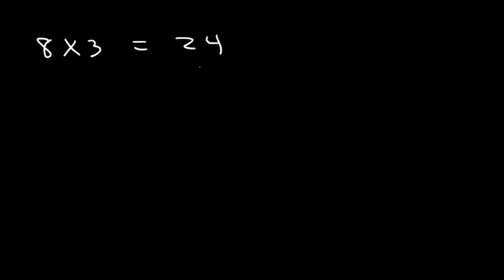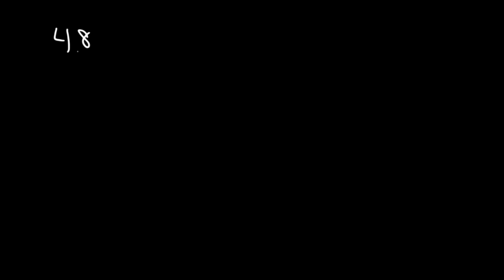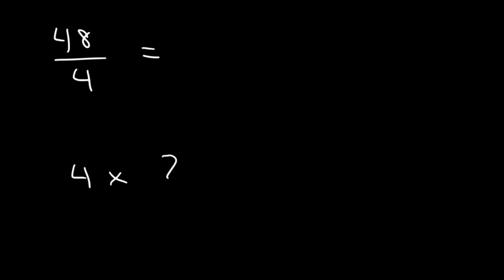Division is the opposite of multiplication. For example, we said that 8 times 3 is 24. Therefore, 24 divided by 3 is 8. Now let's say if you want to divide 48 by 4 — what is that equal to? Ask yourself: 4 times what number is 48? If you know the multiplication tables, 4 times 12 is 48.